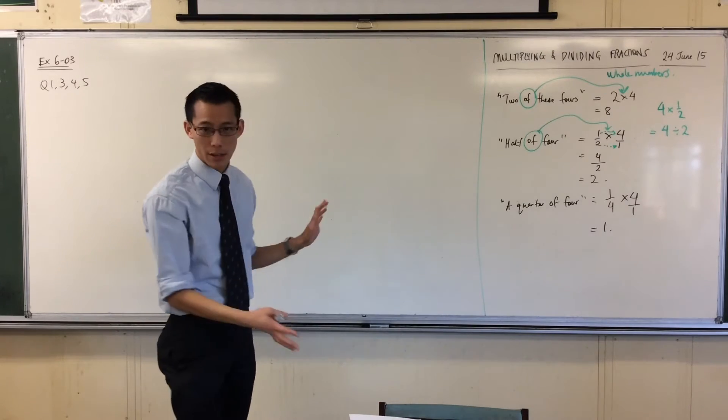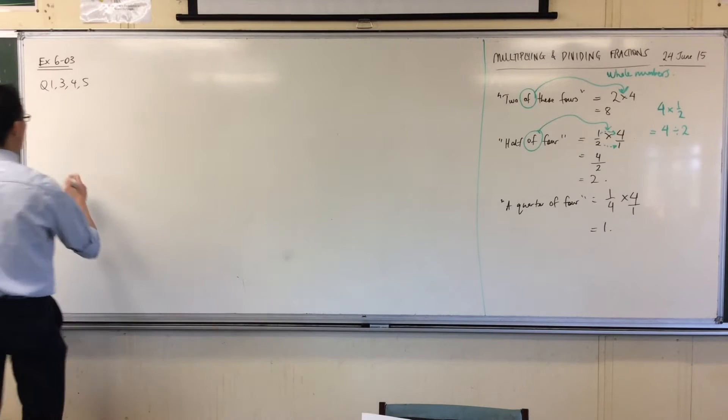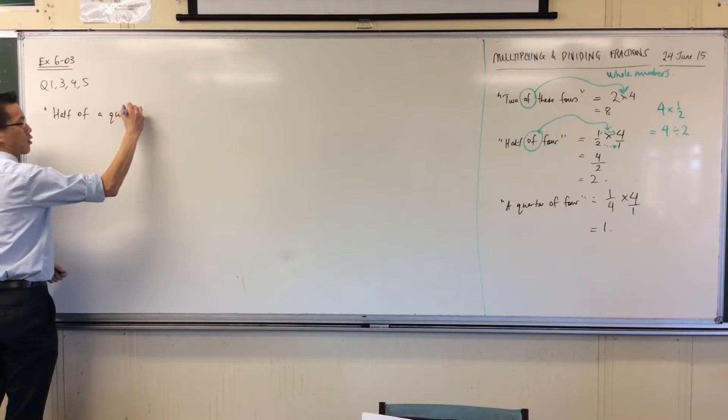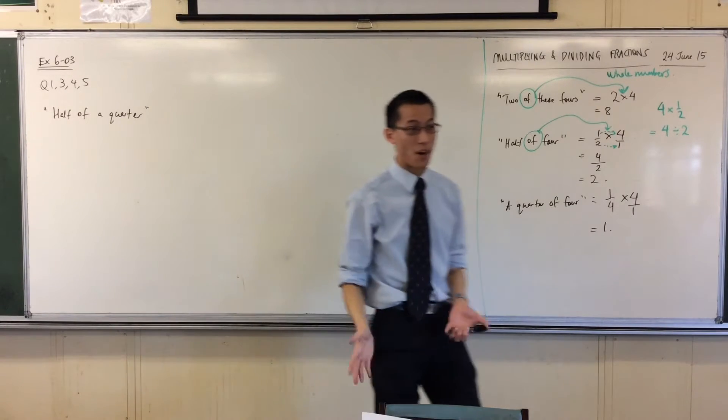We've done combining whole numbers, right? But now I want us to combine fractions. So if I say, for instance, half of a quarter, because we had halves and quarters before. But now what? A half of a quarter.